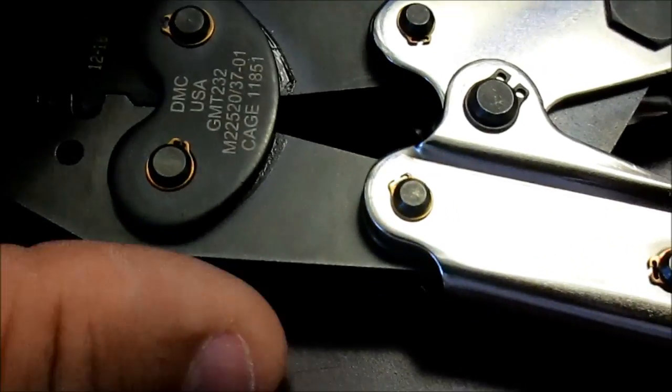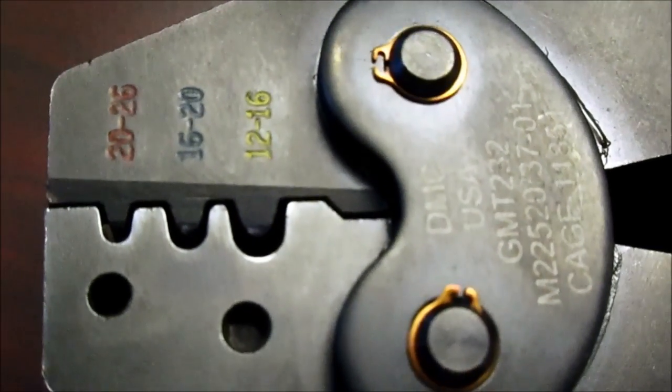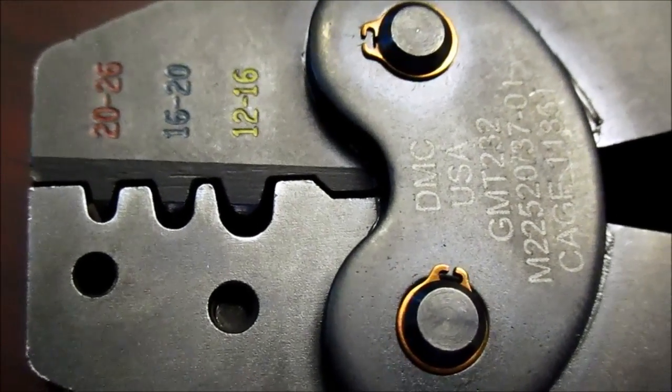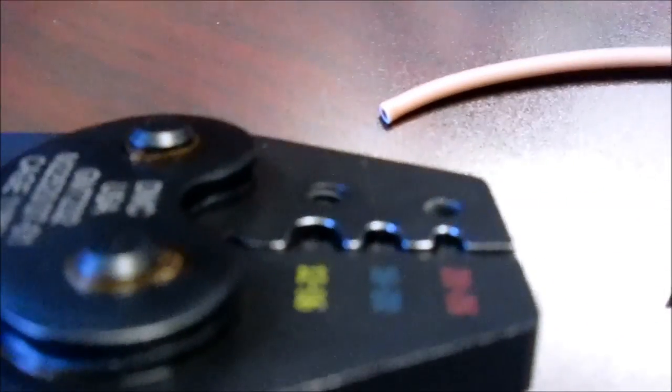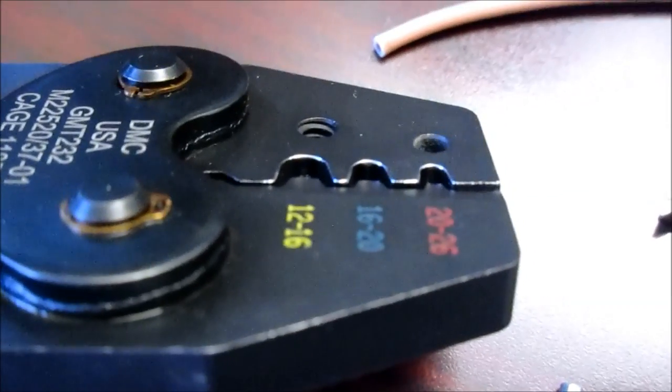This is the tool that we use to crimp them. I'm going to zoom in so you can see it. It also comes color-coded for the specific type of splicer. It's made by DMC and it's kind of nice. It has this little holder assembly, so you'll actually load the splice in from this side.